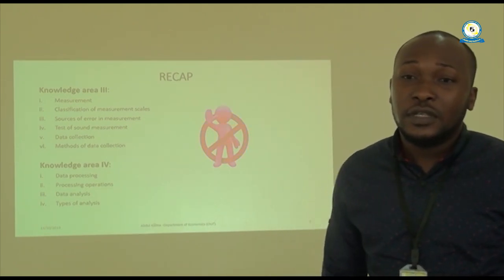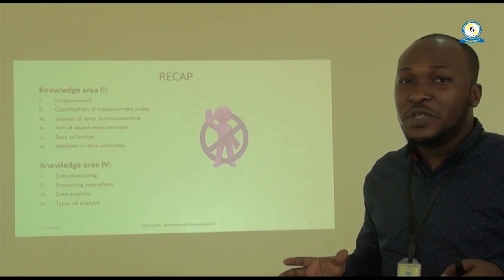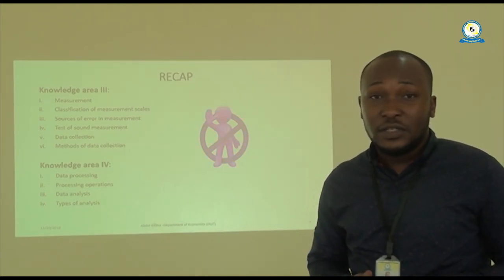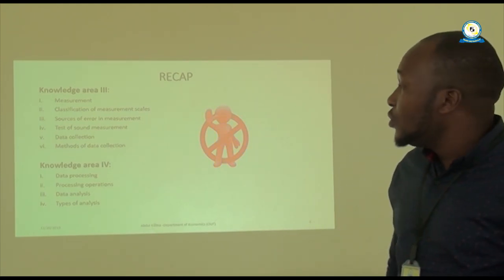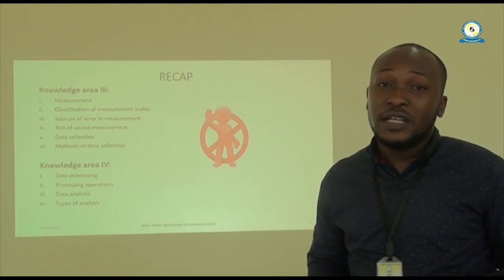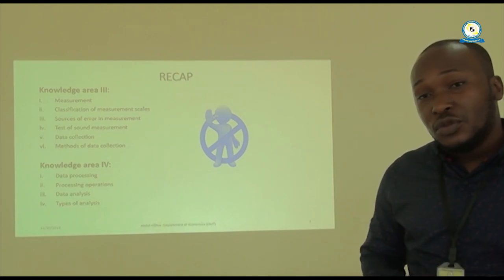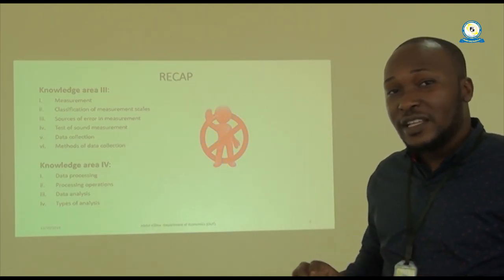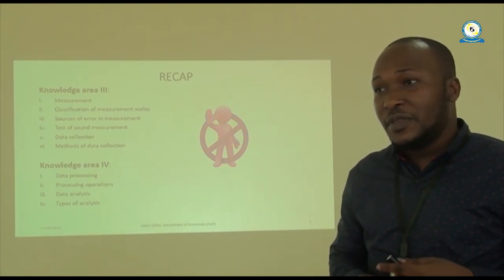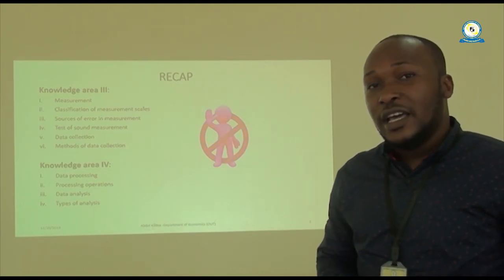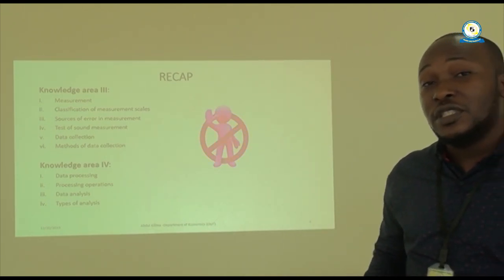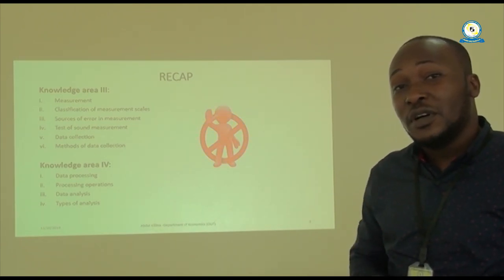Then we looked at how to confirm that we have measured what we really wanted to measure — a test of sound measurement. You can do three tests: validity, reliability, and practicality. Validity means you have measured what you wanted to measure, according to your research objectives. Reliability means the precision of measurement — if someone uses the same tools, will they get the same results? Practicality relates to the economy of devices used and whether they are applicable.